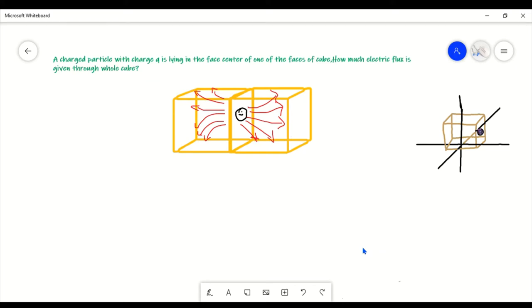The question is: a charged particle with charge Q is lying in the face center of one of the faces of a cube. How much electric flux is given through the whole cube?